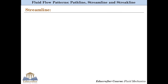Let us first understand what streamlines are and what they represent in the fluid domain. Assume a fluid flowing in a three-dimensional space with respect to the Cartesian coordinate system defined by the usual x, y and z-axis. At some fixed instant of time t, let us represent the motion of the fluid particles located at different positions in the domain by their respective velocity vectors.